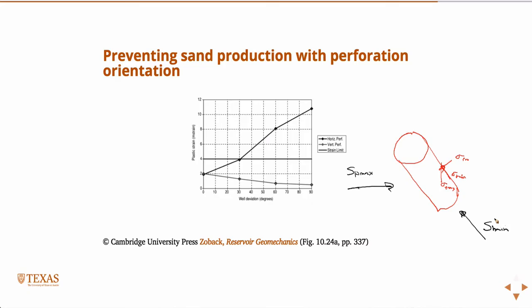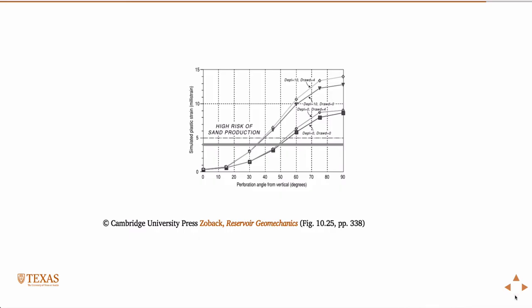For vertical perforations, you're essentially always going to be below that strain limit. However, for horizontal perforations, if you go to high angles of well deviation towards horizontal, the plastic strain criterion is going to be exceeded and you're going to run into sand production problems. That's one way to look at it, and there are a couple more.